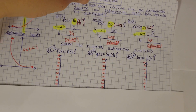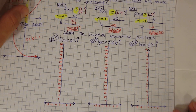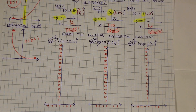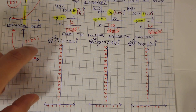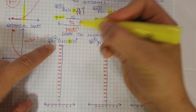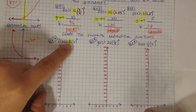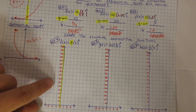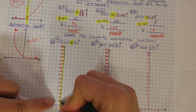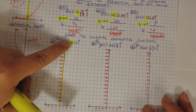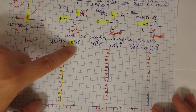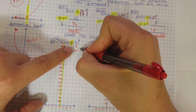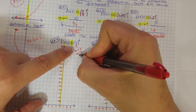Now that you know the general rules for exponential growth and decay, let's do examples 4, 5, and 6. For example 4, we're going to be graphing this function. The 5 is the y-intercept, so we graph it on the y-axis — make a dot at 5. The b value, the number you're multiplying by, is 3. So b equals 3, meaning we're multiplying by 3 each time.